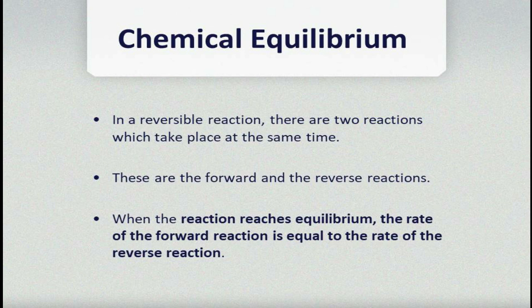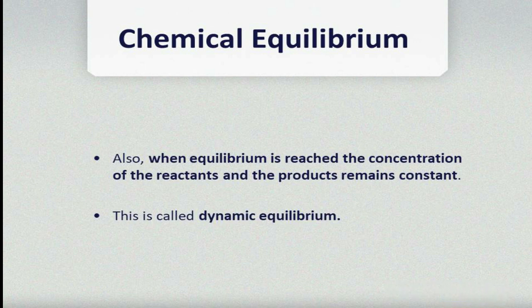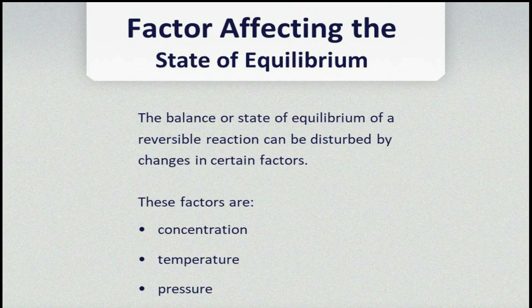In a reversible reaction there are two reactions which take place at the same time: the forward and the reverse reaction. When the reaction reaches equilibrium, the rate of the forward reaction is equal to the rate of the reverse reaction. Also, when equilibrium is reached, the concentration of the reactants and the products remains constant, and this is called dynamic equilibrium — there is no change in the concentration of the reactants and no change in the concentration of the products.